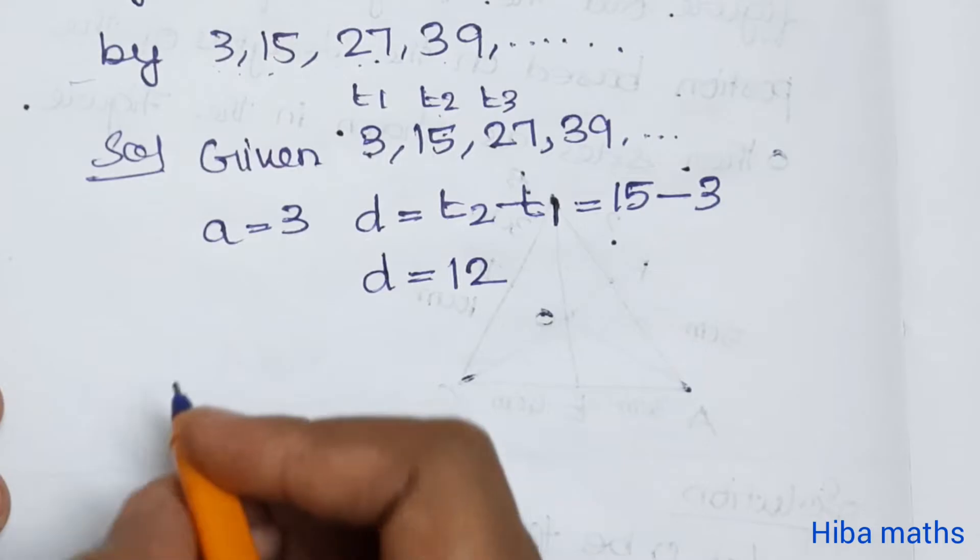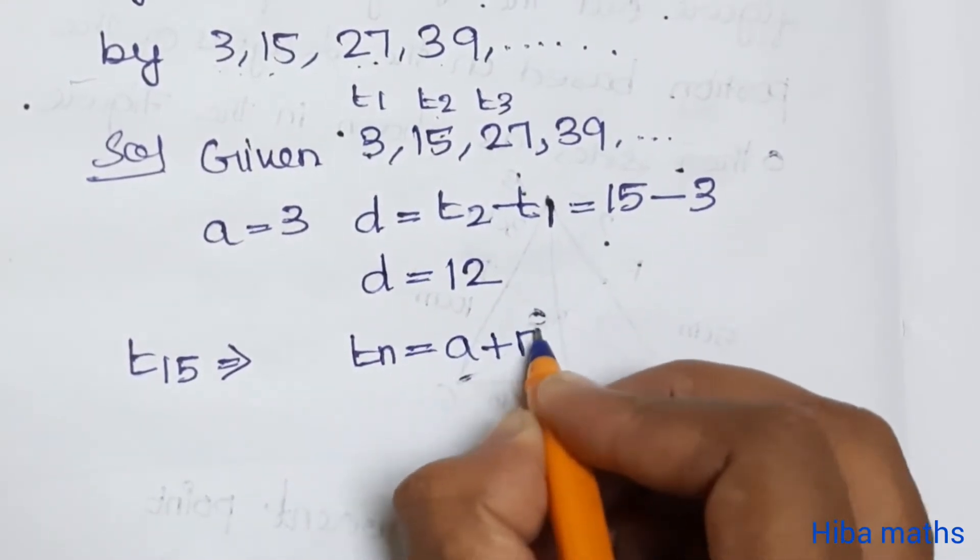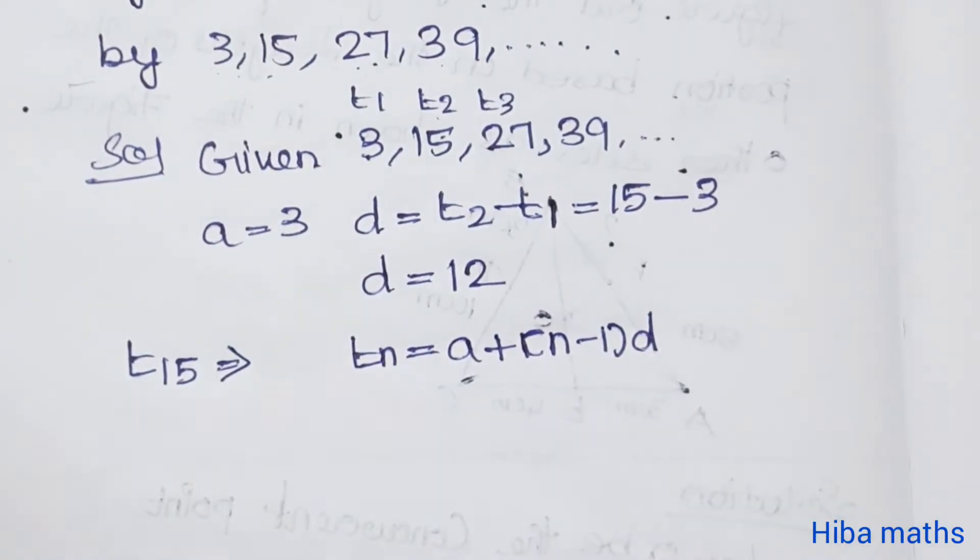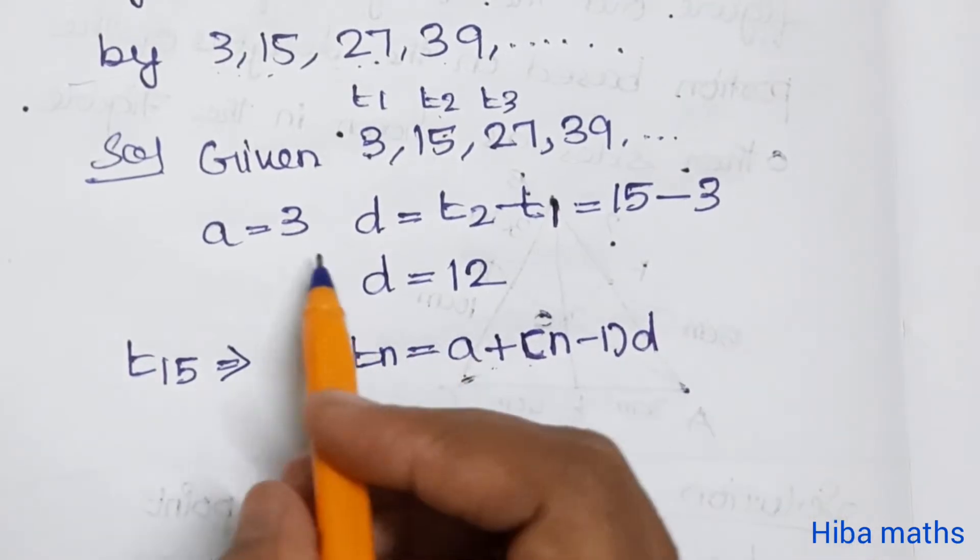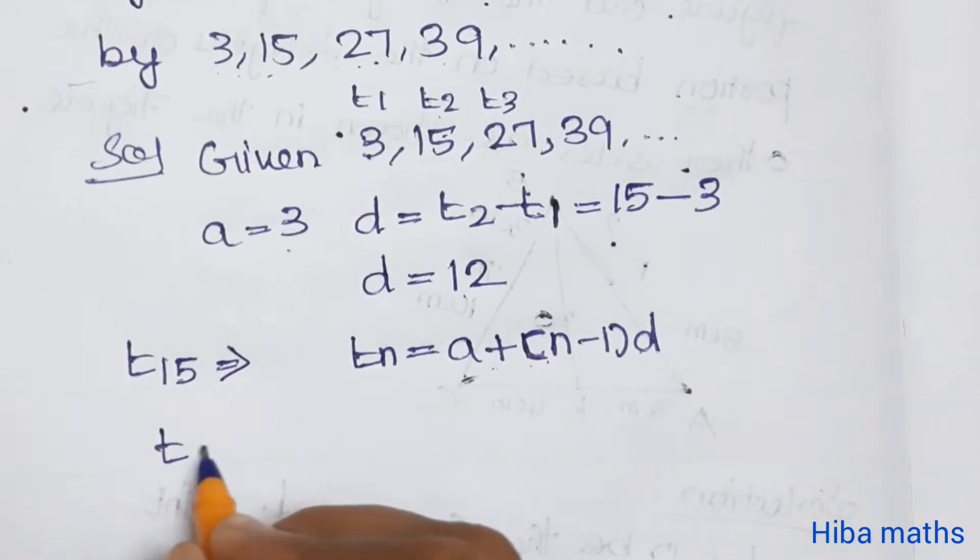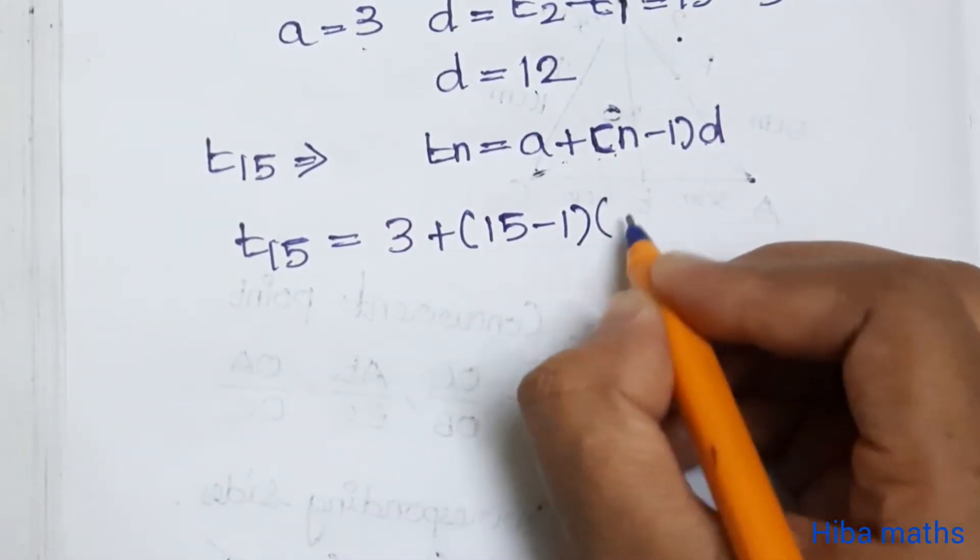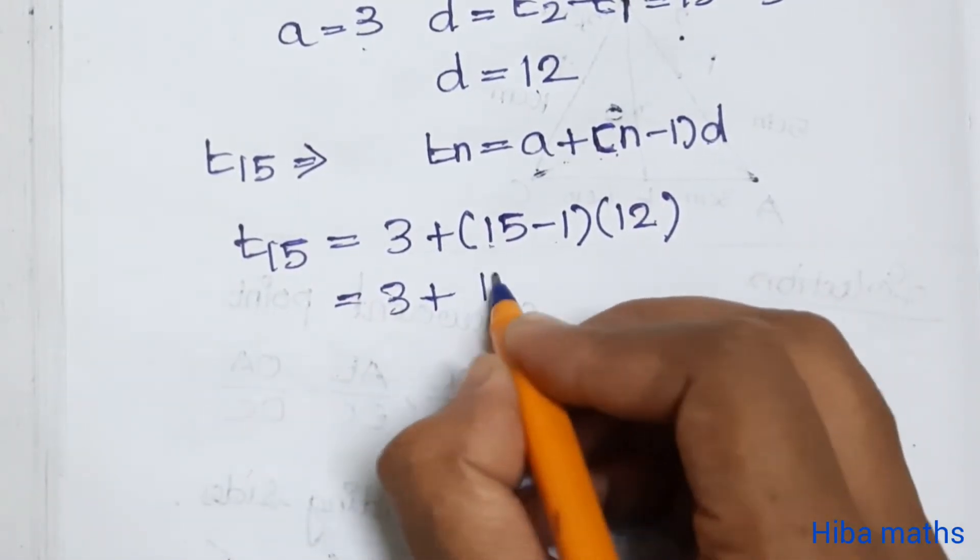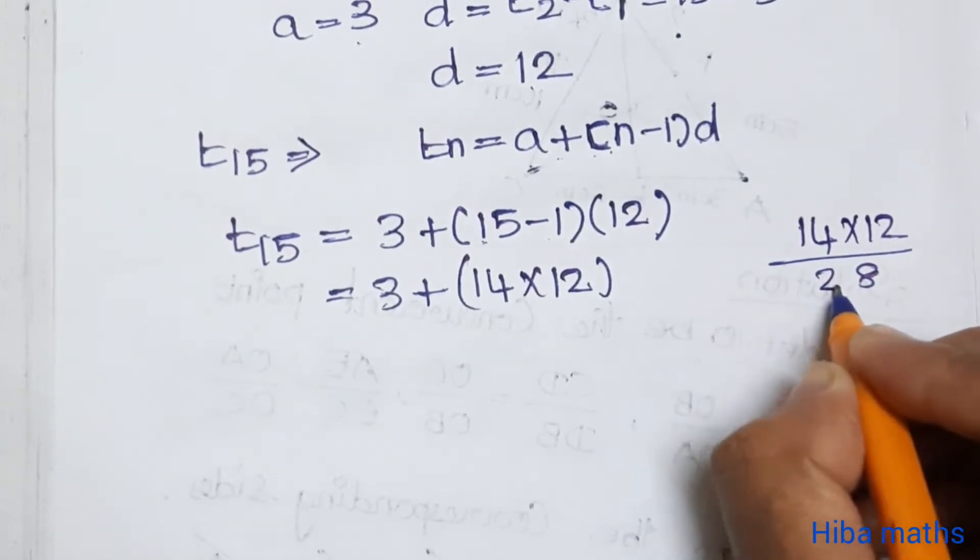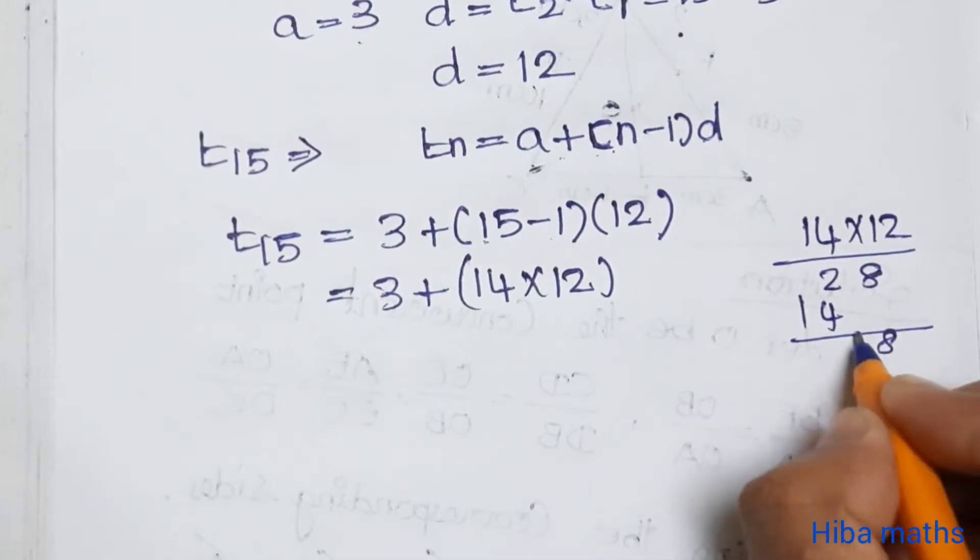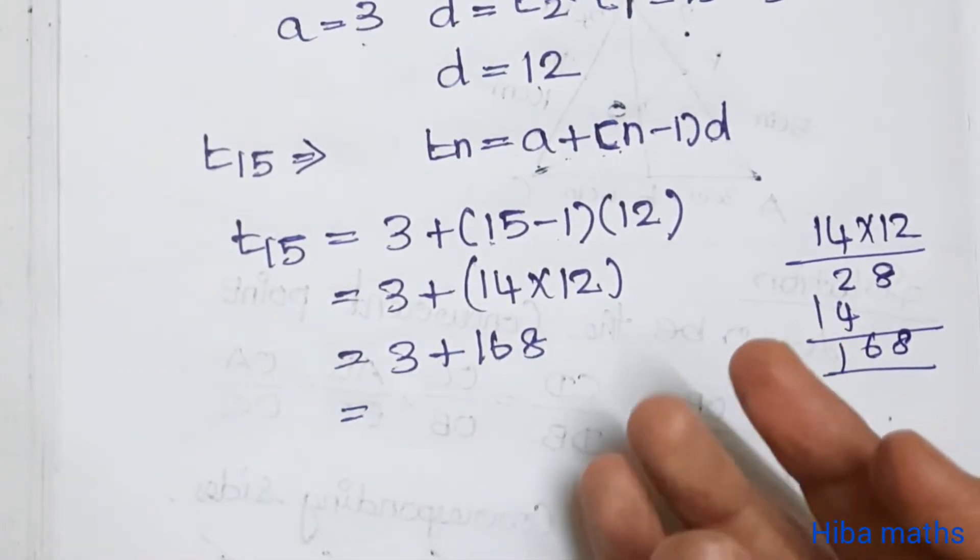T of n is equal to a plus n minus 1 into d. So a plus n minus 1 into d. Now a value 3, d value 12 and t of 15 is equal to 3 plus 15 minus 1 is 14, 14 into 12. 14 into 12 is 168. So that is equal to 3 plus 168 is 171.